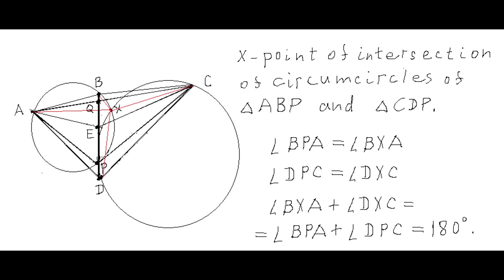If we draw the circumcircles of triangles ABP and CBP, the second intersection point — which we call X — has the same property: the sum of angles BXA and DXC equals 180 degrees. By chasing inscribed angles as shown in the diagram, we can easily prove this.